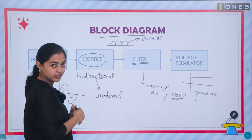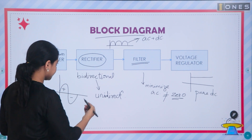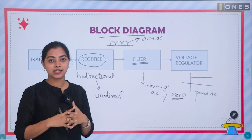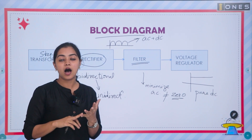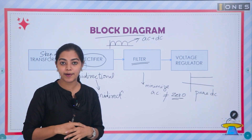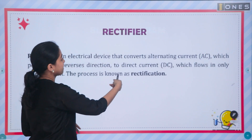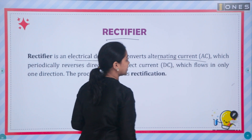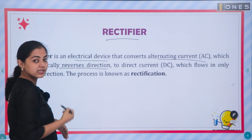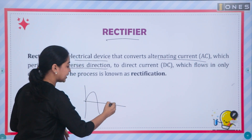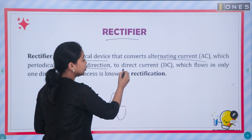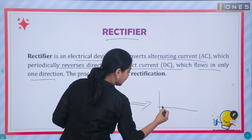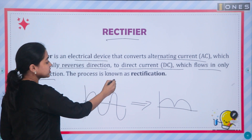What do we call rectifiers? Rectifiers convert bidirectional to unidirectional, and the output is pulsating. In the rectifiers, there are many types of classifications. Based on their construction, they are classified as half-wave rectifier, full-wave rectifiers, and center-tap and bridge rectifiers. A rectifier is an electrical device that converts alternating current (AC), which periodically reverses its direction, to direct current (DC), which flows only in one direction. This process is known as rectification.